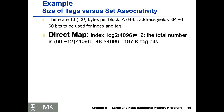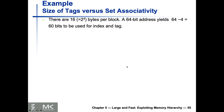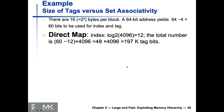To summarize: for direct map the index is 12 bits and the tag is 48 bits. We'll also compute two-way and four-way. So far, so good.